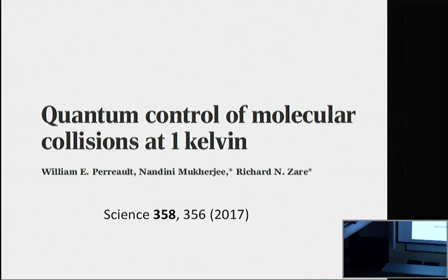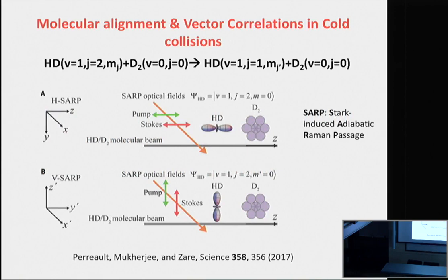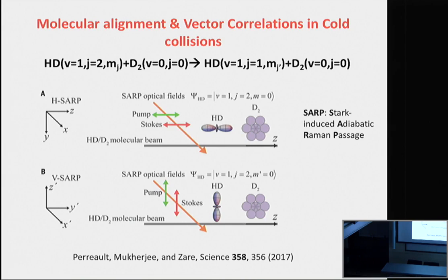I want to highlight another experiment reported quite recently where there is actually no cooling involved at all. You have a supersonic molecular beam with two co-propagating molecules. You have HD prepared in a specific vibrational-rotational level and also in specific MJ quantum states, and then D2 that is not state-prepared — it is mostly in V=0, J=0. They were able to look at an inelastic scattering process with MJ state resolution, leading to a J=2 to J=1 de-excitation process. The HD could be oriented along the molecular beam or perpendicular to the magnetic field.